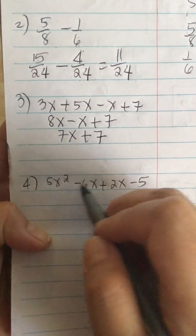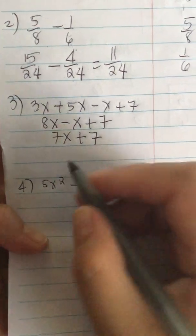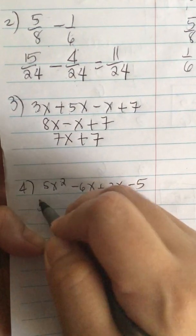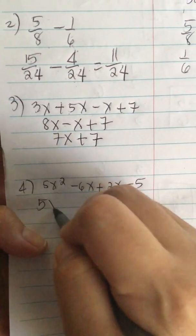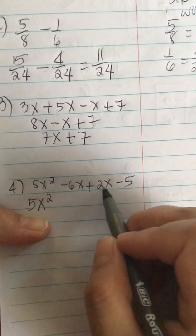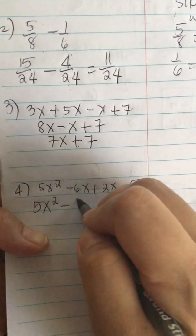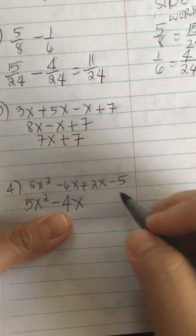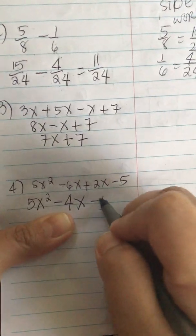So we have 5x² minus 6x plus 2x minus 5. We have 5x². Now we have minus 6x plus 2x for a net of minus 4x, and then we have a minus 5.